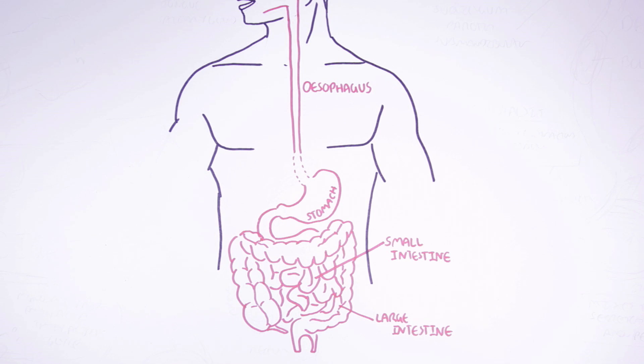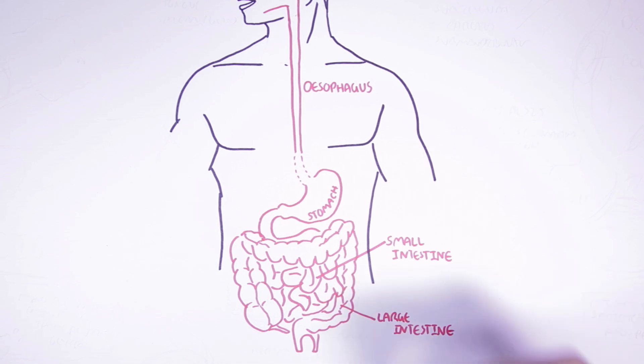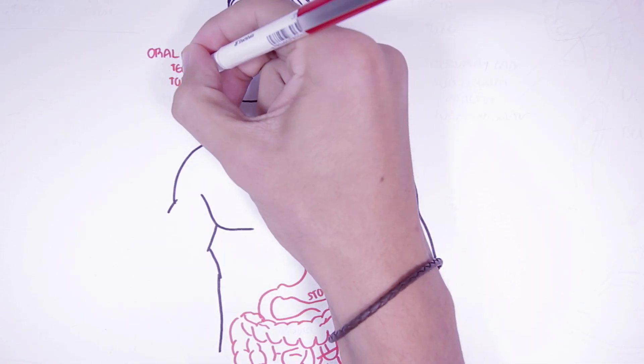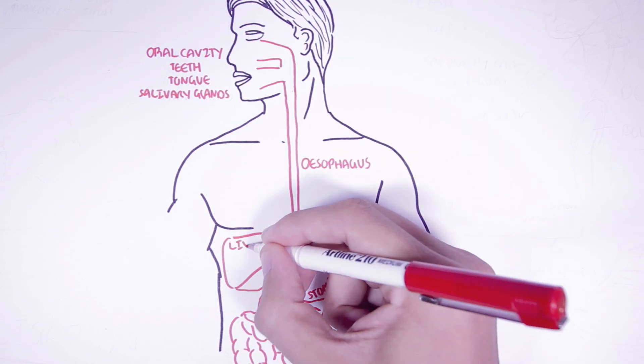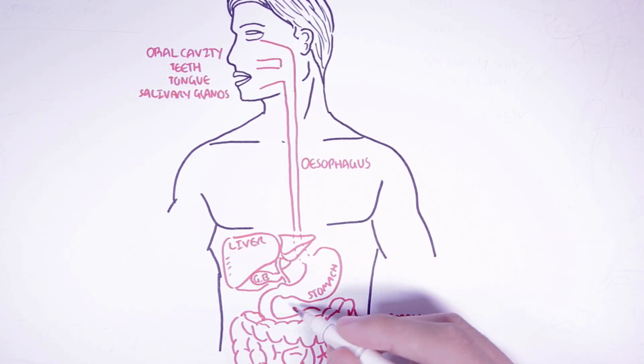But there are also other organs called accessory organs that play fundamental roles in digestion. These organs include the salivary glands, tongue, teeth, the liver, gallbladder, and the pancreas.